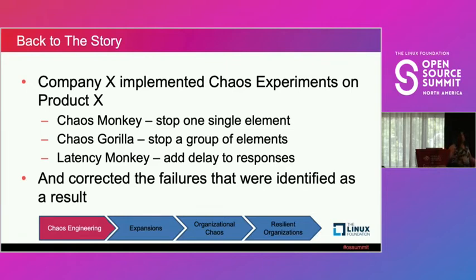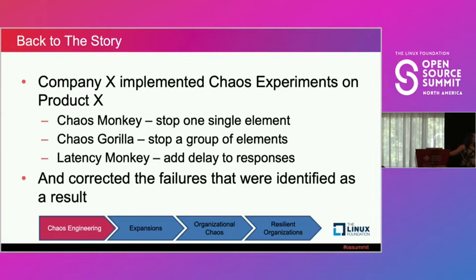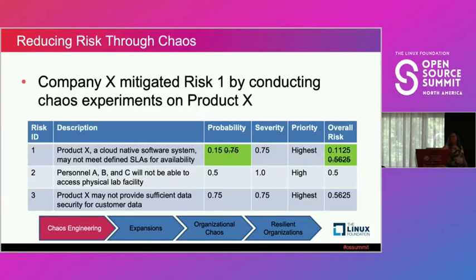Back to Company X — to address risk number one, they implemented chaos experiments on Product X: Chaos Monkey, Chaos Gorilla, and Latency Monkey. They stopped random elements within the system, stopped a group of elements mimicking the loss of an entire data center, and injected delays between microservices. They found some failures, corrected them, and the result was significant: the probability of failure dropped from 0.75 to 0.15, and the overall risk for risk one was now 0.1125.